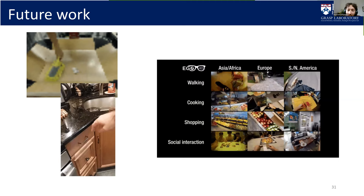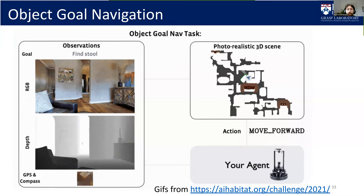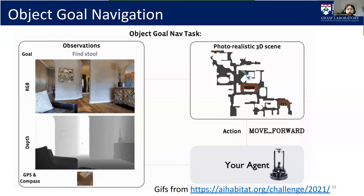Now I'll talk about how to make robots more curious. Even with perfect human data, there will always be some domain gap, so robots always need some data from interacting with the world. Rather than using random exploration, we want the robot to seek interesting things — find places where it doesn't know much and go to places where it'll learn the most possible.